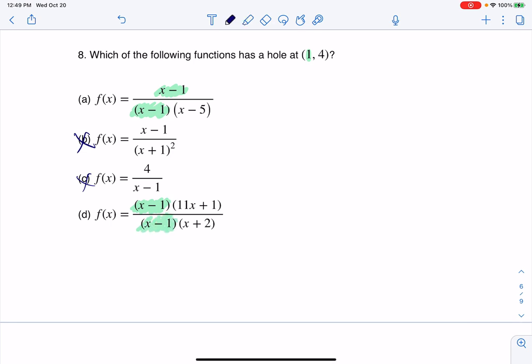So we've got two functions here that do have holes at x equaling 1, but the question is, which one has the hole at 1, 4? So let's figure this out.